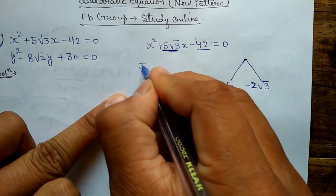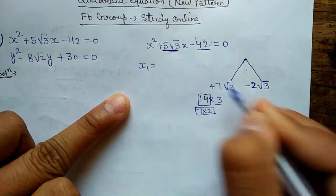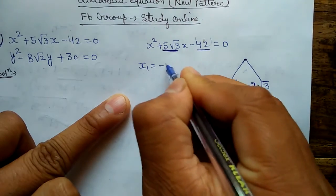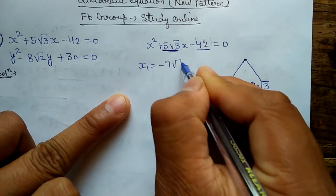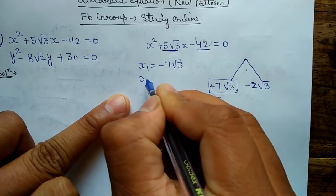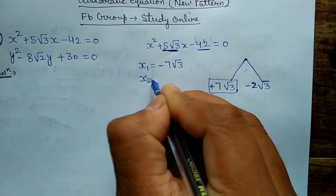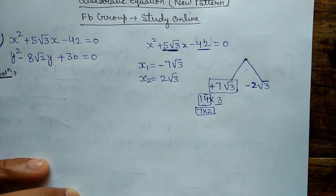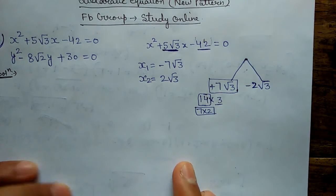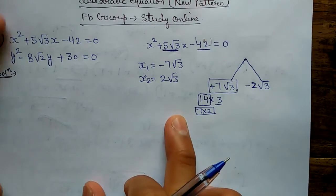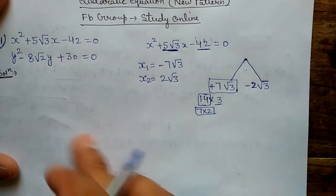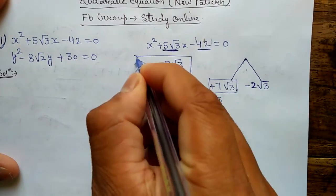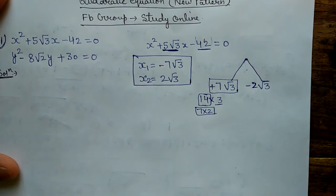How will we find the roots? x₁ will be equal to — whatever sign comes here, just take the opposite sign — so minus 7√3. And x₂ will be 2√3 only. These are the roots of the first equation.